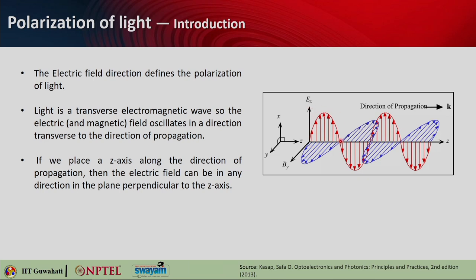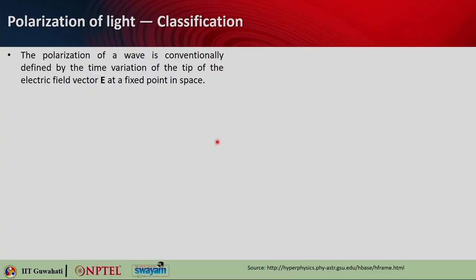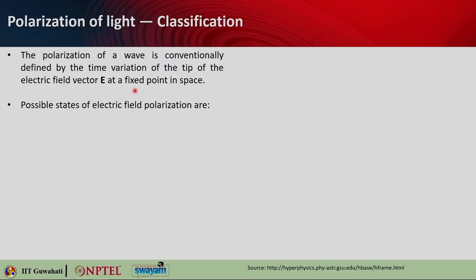If we assume light is propagating along the z direction, the electric field is assumed to be along x, which is orthogonal to z, and the magnetic field will be in the y direction. A polarization of light is conventionally defined by the time variation of the tip of the electric field vector at a fixed point in space, which brings a couple of possible states of electric field polarization.